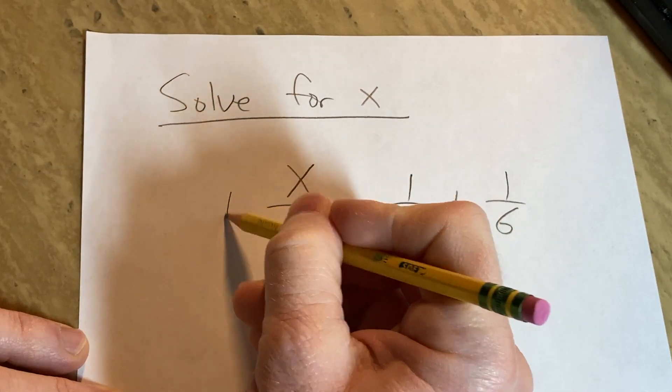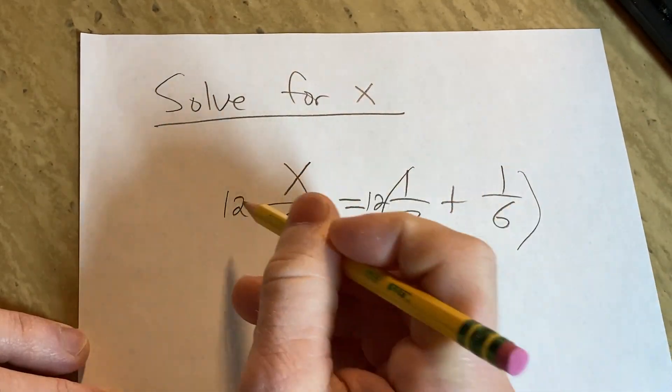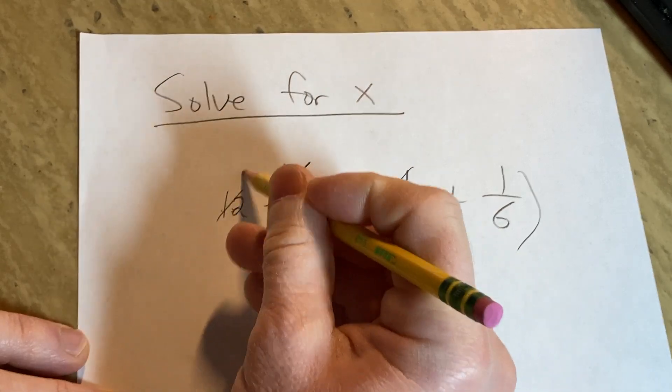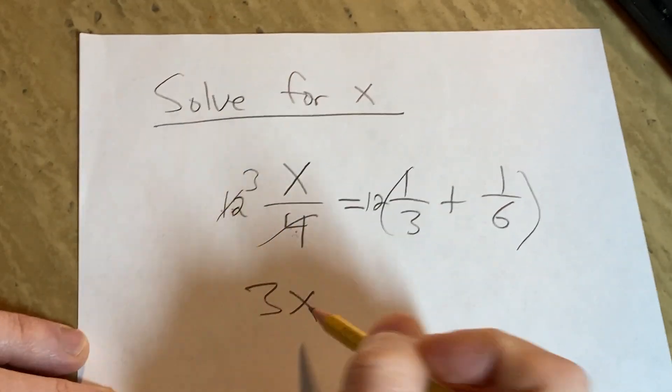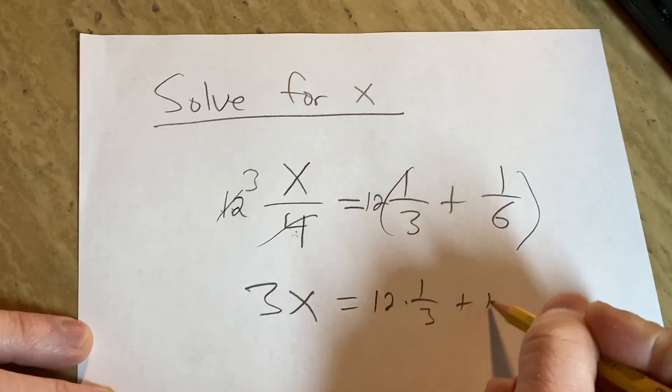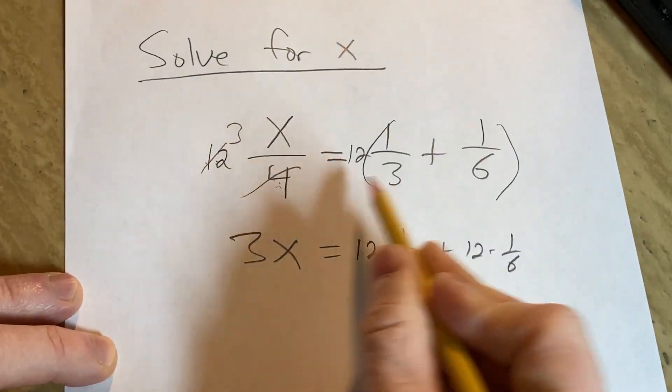So if we multiply by 12, 4 goes into 12 three times. So this is going to be 3x equals 12 times 1 third plus 12 times 1 sixth. Just distributing this 12 through.